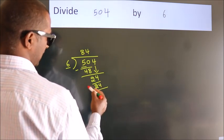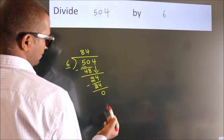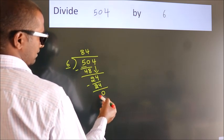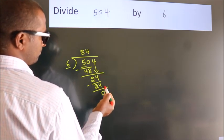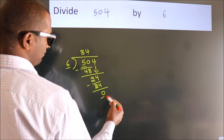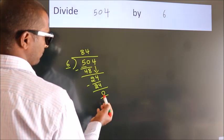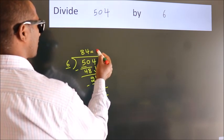Now, we subtract. We get 0. After this, no more numbers to bring it down. And we got remainder 0. So, this is our quotient.